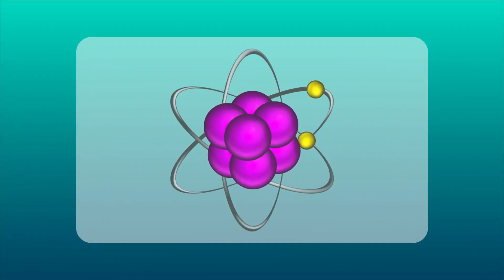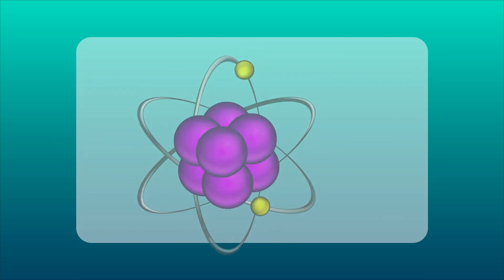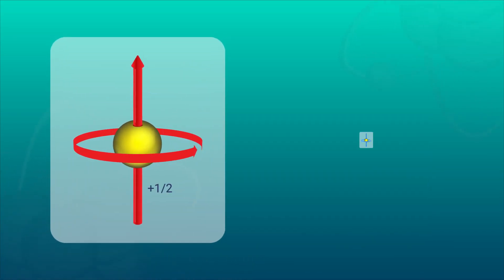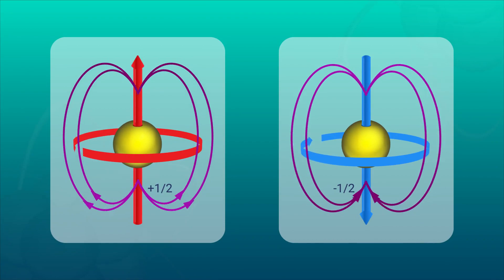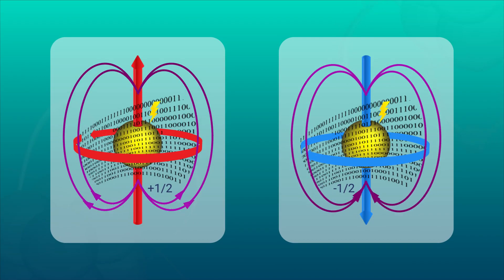Electrons in an atom possess spins with two states, one facing upwards and the other downwards. The magnetic moments and degrees of freedom associated with the spins can be manipulated to carry information and transfer energy.